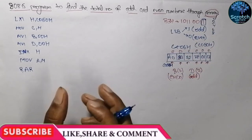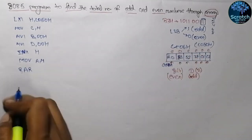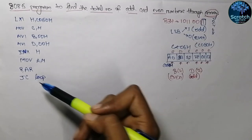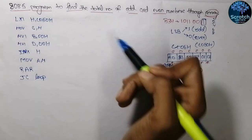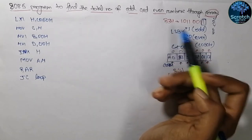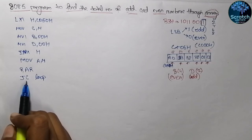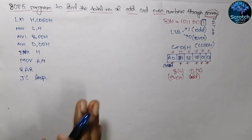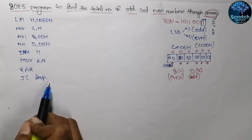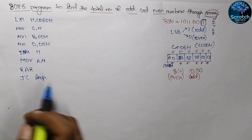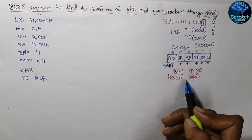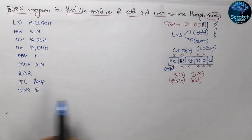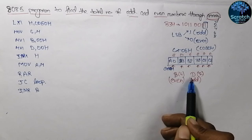We check the content of the carry flag to determine whether the number is odd or even. We use a JC (jump if carry) instruction. If the carry flag contains 1 it jumps to a specific label. If it contains 0 that means this is an even number, and we increment the content of register B using INR B. If the number is odd we increment the content of register D using INR D.